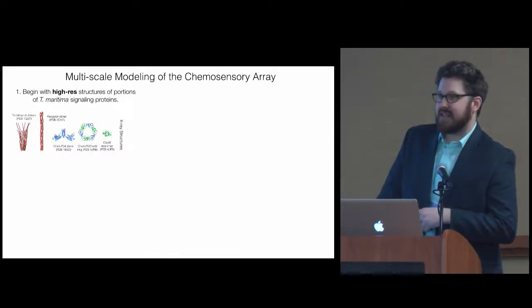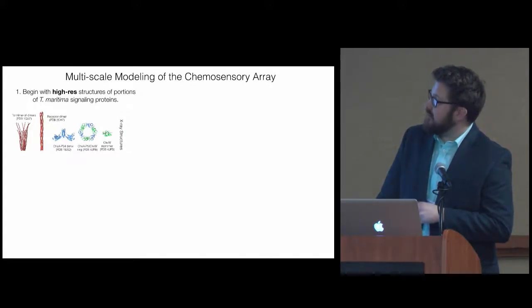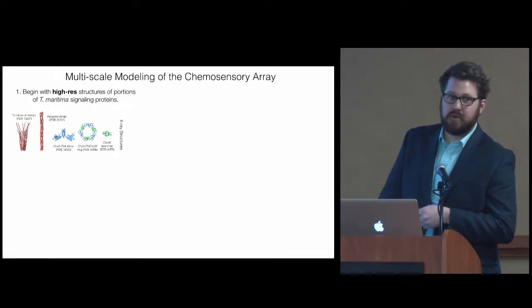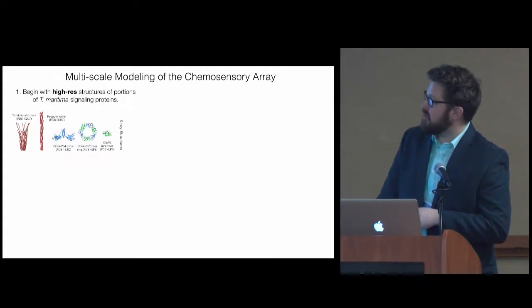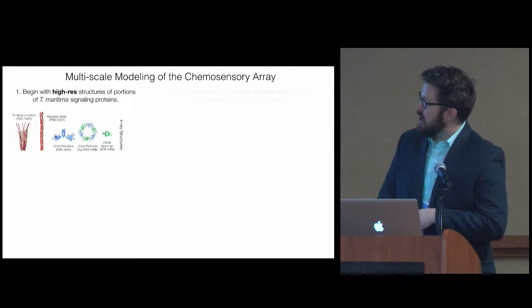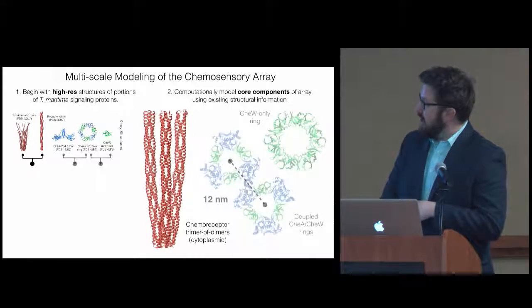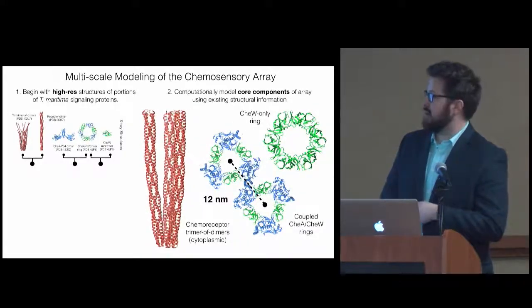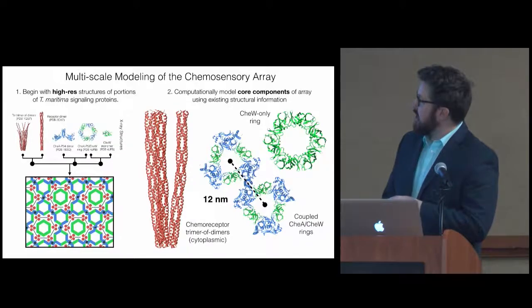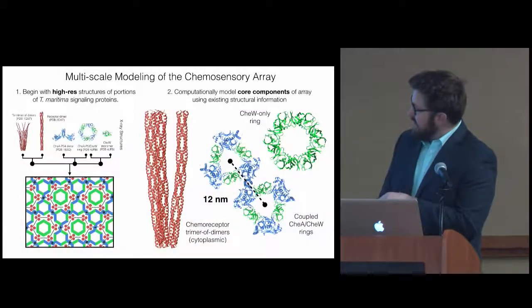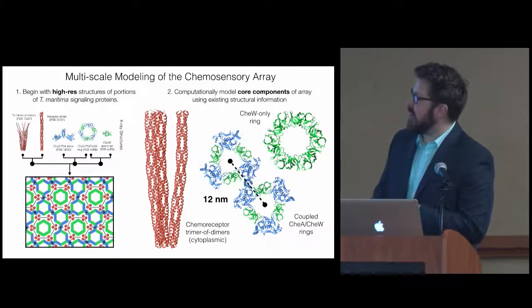So in terms of actually building the thing, this is where some of the multiscale modeling techniques come in. We have high-resolution structures of portions of some of these proteins. We have the cytoplasmic portion of the receptors as a trimer, but not any of the higher cytoplasmic portion. We also have portions of part of the kinase and then actually a full structure of the monomer. From these, using existing structural information, we can actually build up models of these core complexes. You see here the CheW-only ring, the CheA-CheW ring, and then the trimer of dimers. This is shown from the top here.